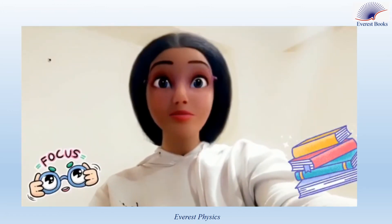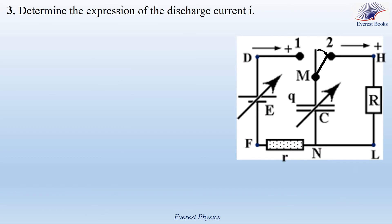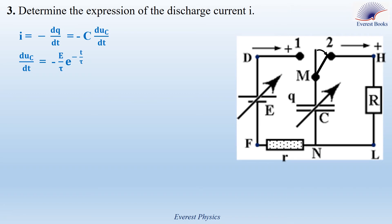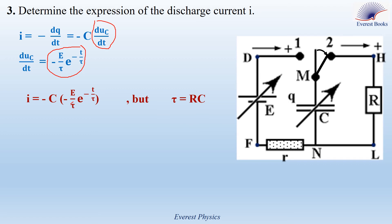Focus — this is important. Part 3: Determine the expression of the discharge current I. From previous results, I = −C·DUC/DT, and DUC/DT = −(E/τ)·e^(−t/τ). Replacing DUC/DT and substituting τ = RC, we get I = C·E/(RC)·e^(−t/τ). The C cancels, giving I = (E/R)·e^(−t/τ). This is the expression of the discharge current.